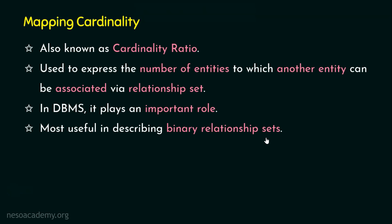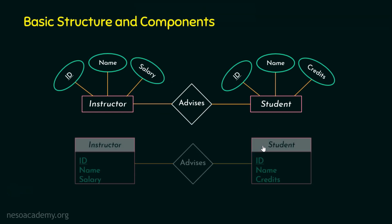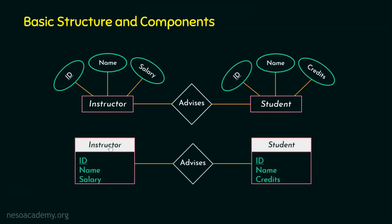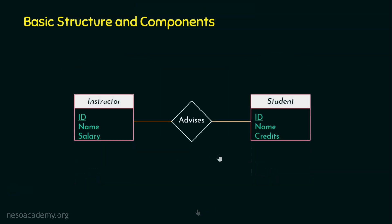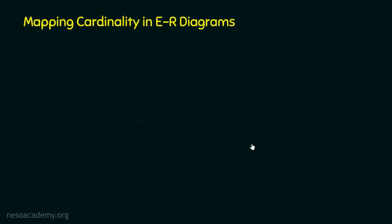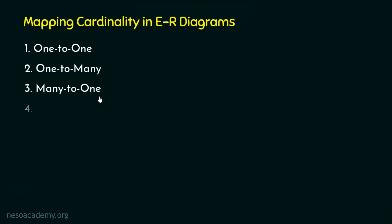Let's now move on to implement this with the help of an ER diagram. There are multiple conventions in representing the ER diagram — we are going to take a number-based approach. The different types of mapping cardinalities are: one to one, one to many, many to one, and many to many.